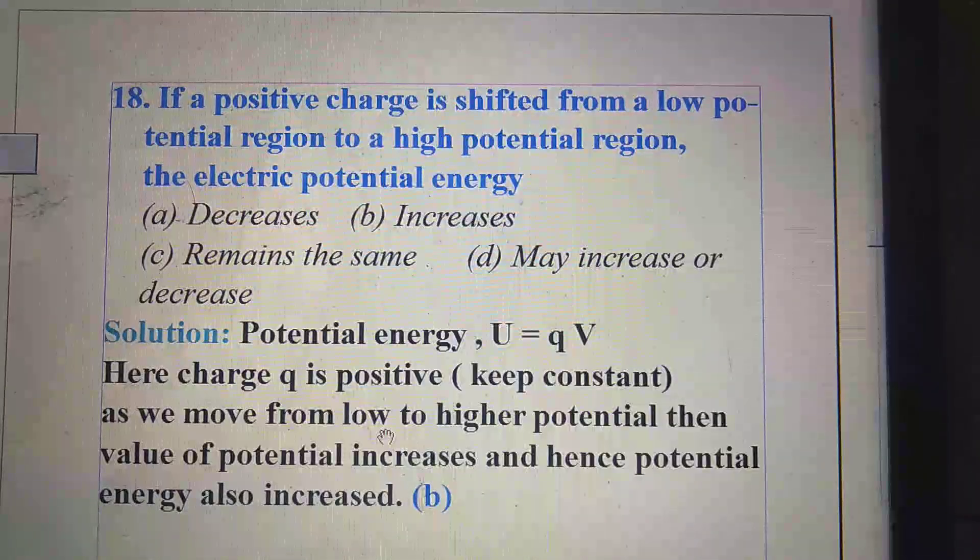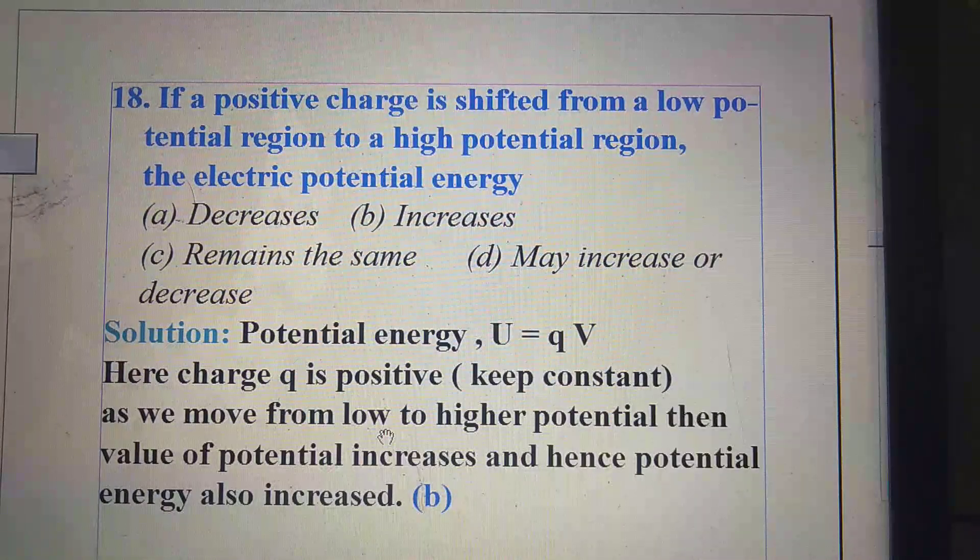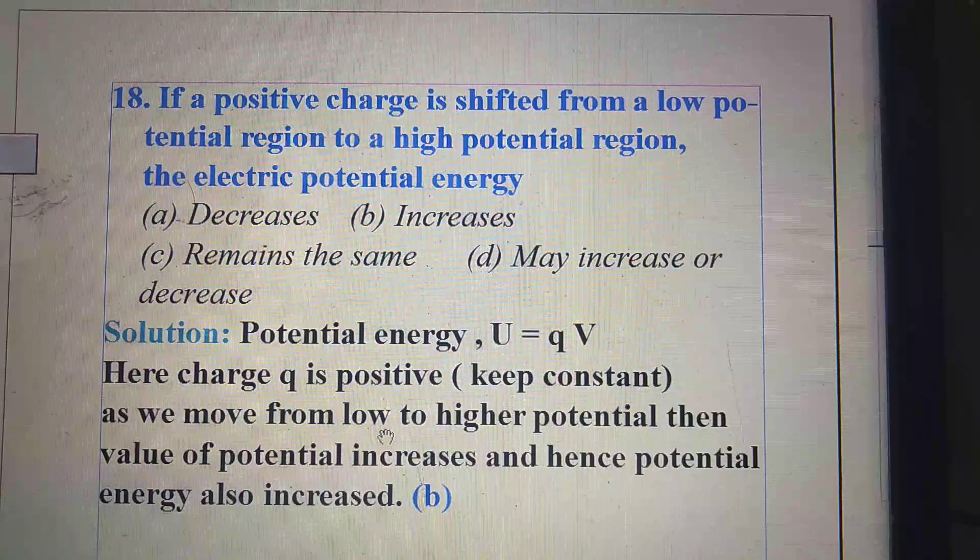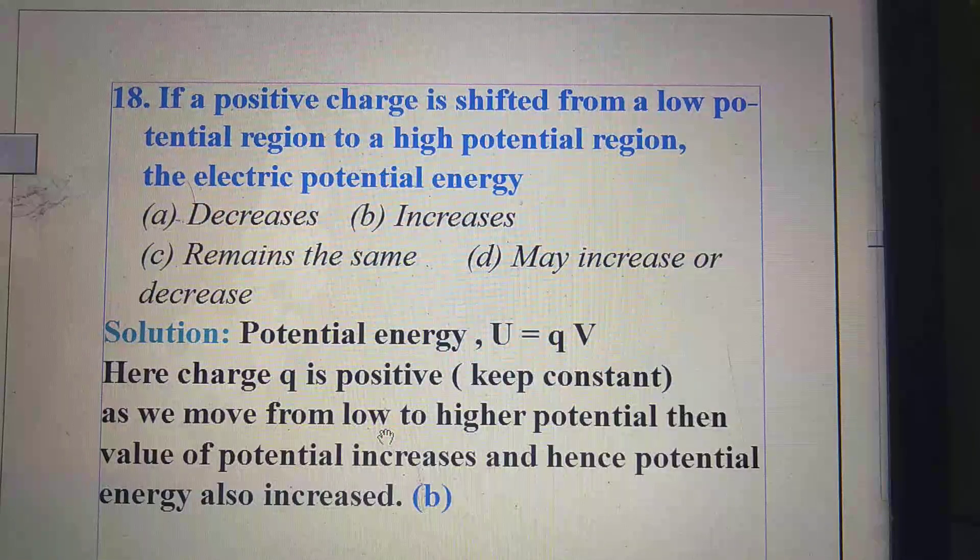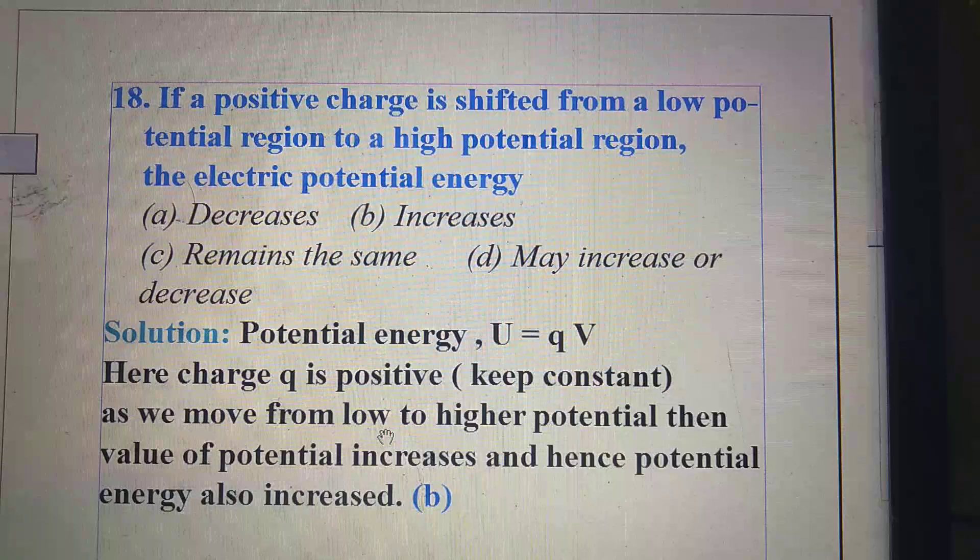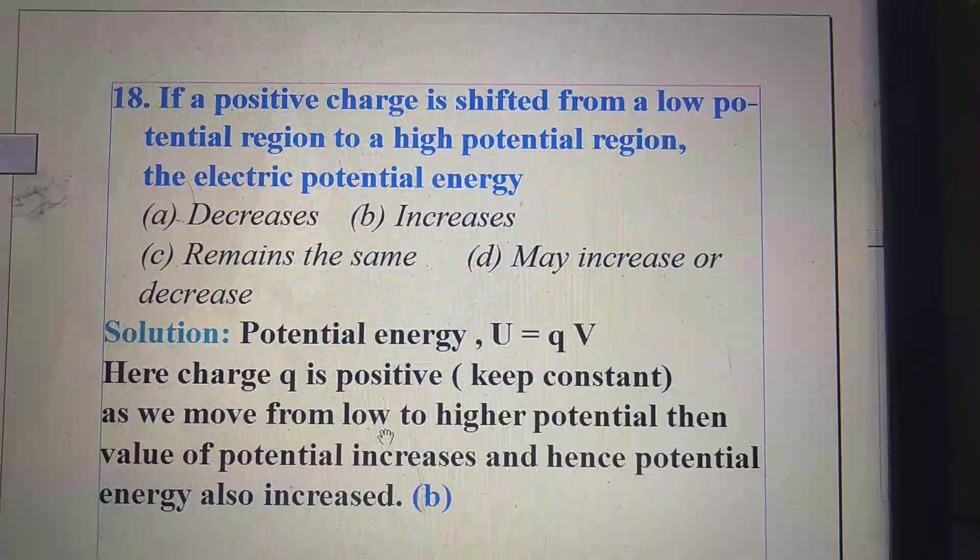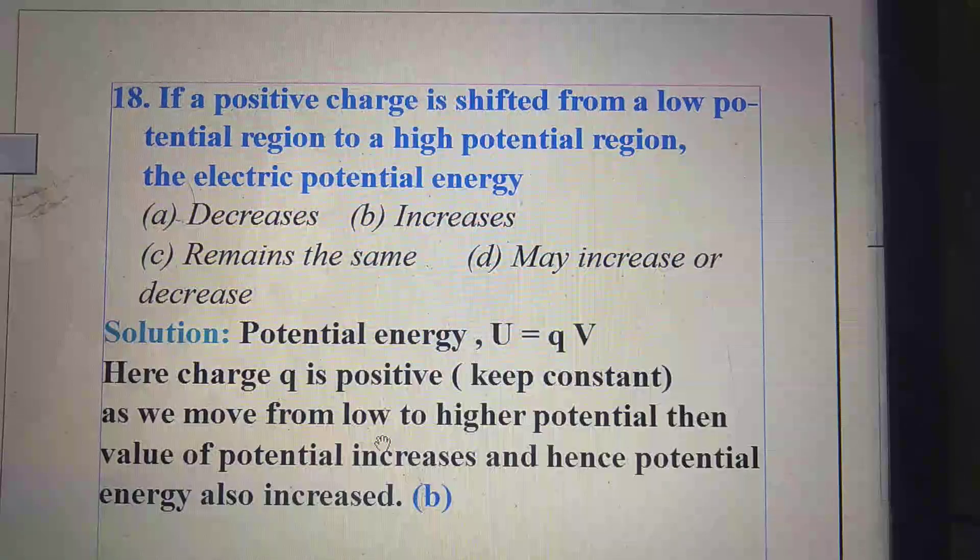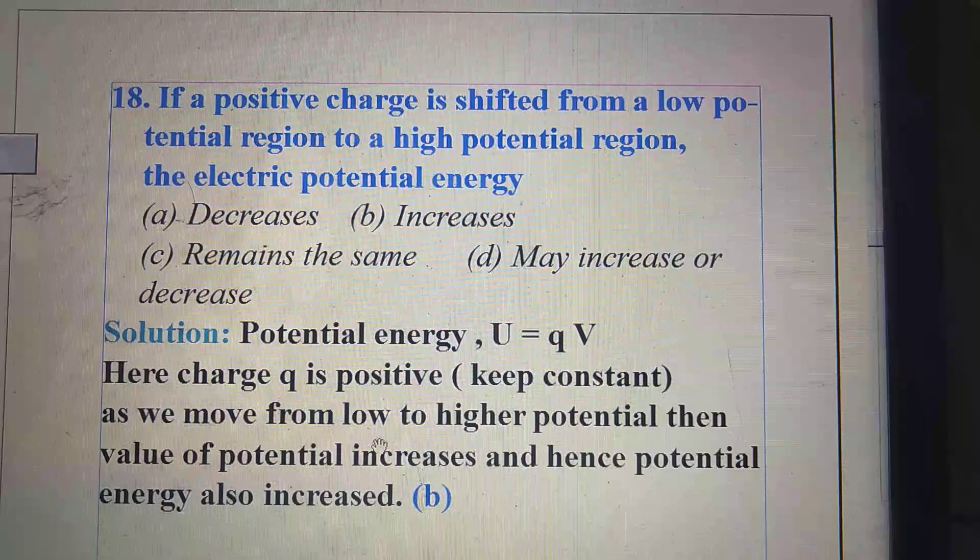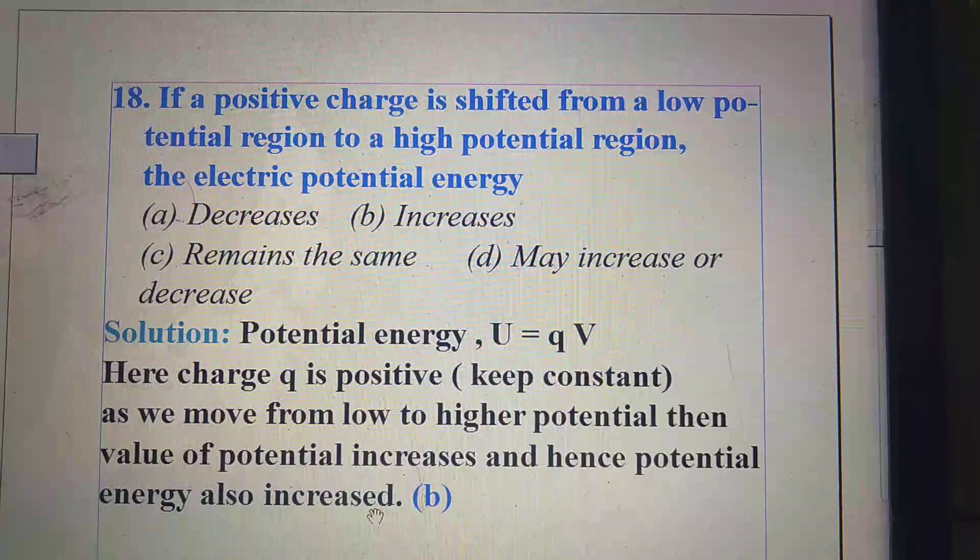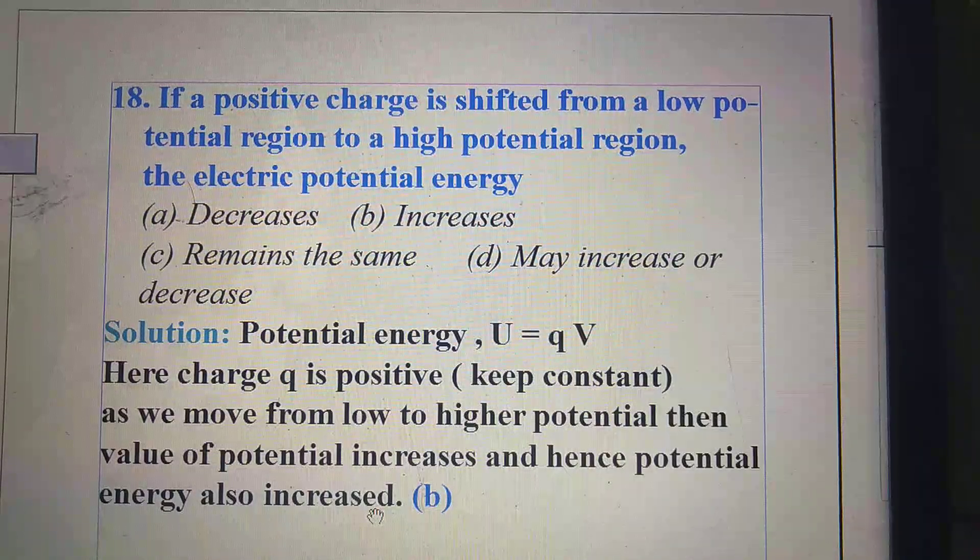How can we solve this one? Here, we have to use the concept of potential energy. And what is the formula of potential energy? U equal to Qv. Here, charge Q is positive and we kept constant. We move from low to higher potential, then definitely value of potential increases and hence potential energy also increases. So, right option is B.